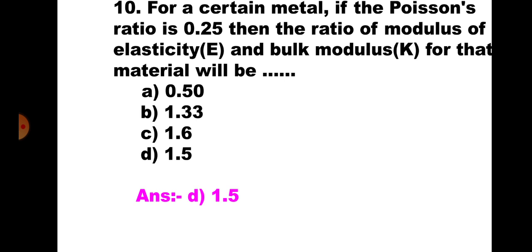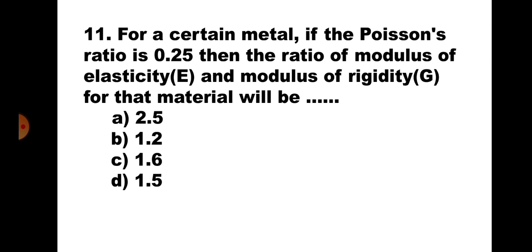Question number 11. For a certain metal, if the Poisson's ratio is 0.25, then the ratio of modulus of elasticity E to modulus of rigidity G will be: Using the relation E = 2G(1 + μ) and substituting μ = 0.25, you get E/G = 2.5. Hence, the correct answer is A: 2.5.